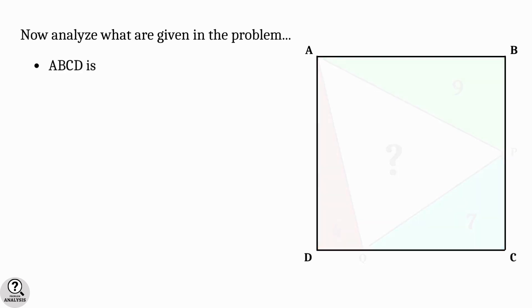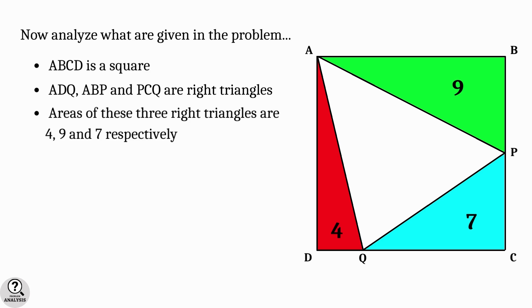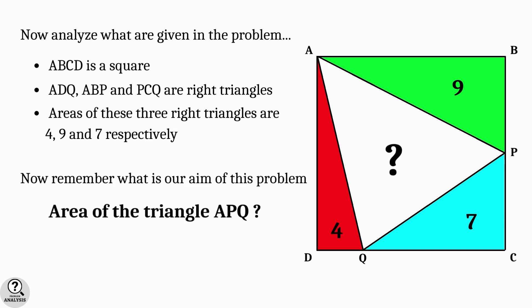First of all, we have given that ABCD is a square. Secondly, the triangles ADQ, ABP and PCQ are right triangles. And then areas of them are given as respectively four, nine and seven square units. Now what is our problem? It's nothing but to find the area of the triangle APQ. This is the structure of our problem. So always keep in mind.